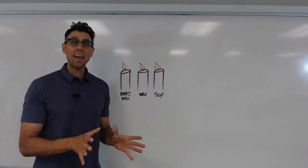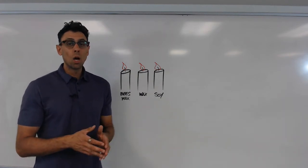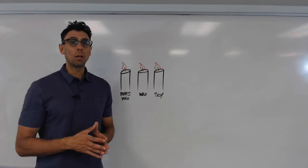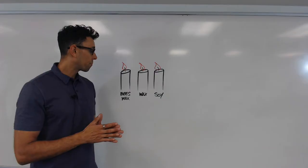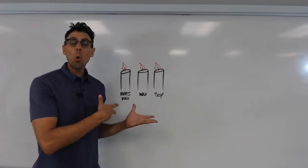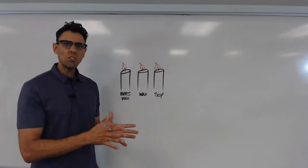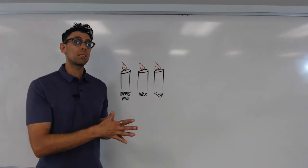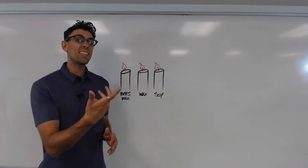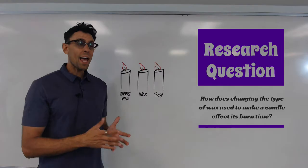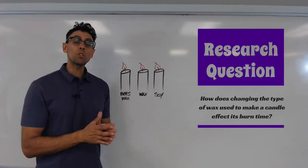To understand the difference between independent and dependent variables — the two things that change in an experiment — we should look at a simple experiment and start from there. The experimental question I'm investigating is: how does changing the type of wax you use to make a candle affect the time it burns for? In other words, how does changing what the candle is made of affect its burn time?